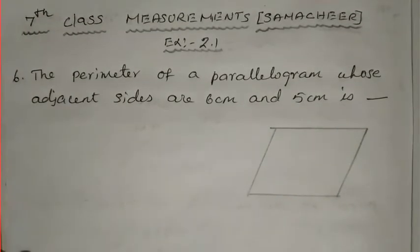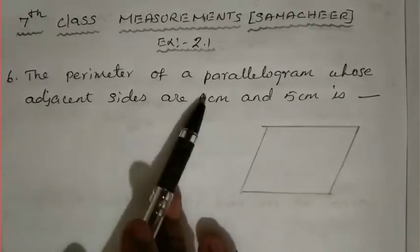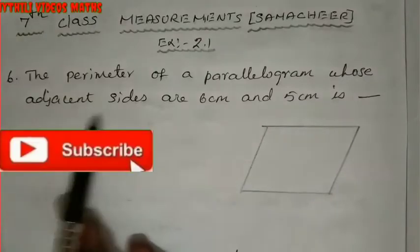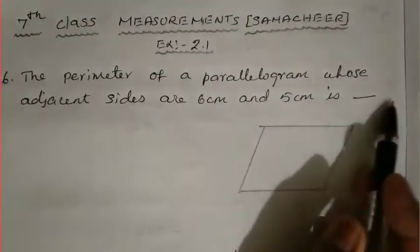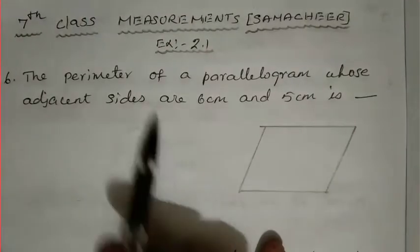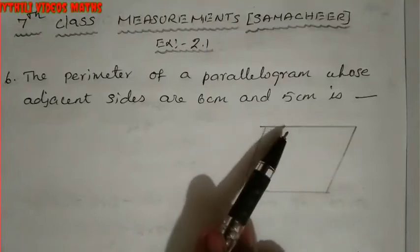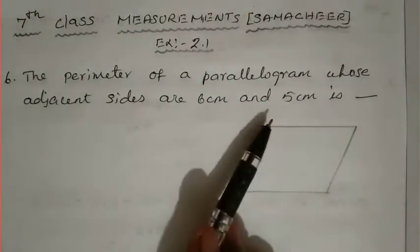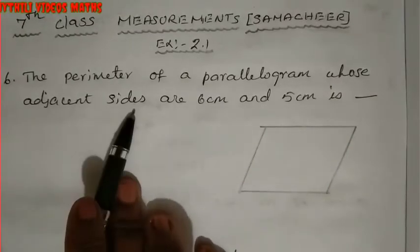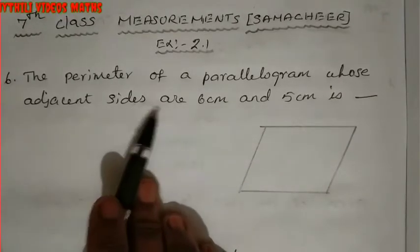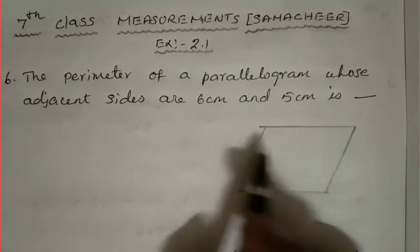The sixth sum: the perimeter of a parallelogram whose adjacent sides are 6 cm and 5 cm. We have to find the answer. Perimeter means the sum of all sides - we add all sides to get the perimeter. They have given adjacent sides. Adjacent means the next side, the neighboring side.